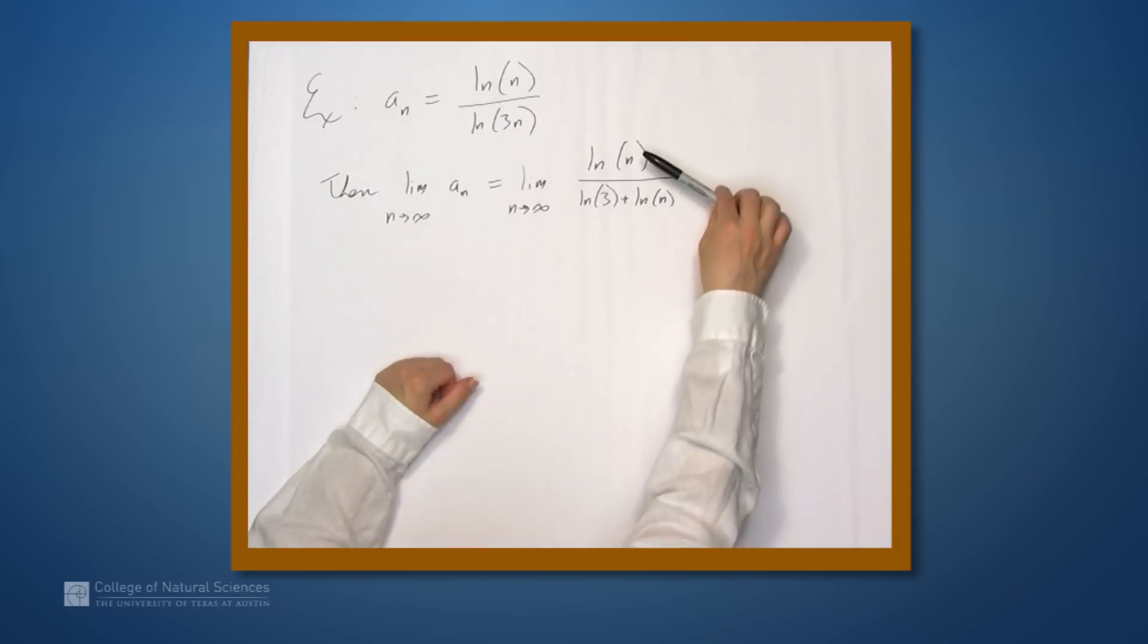Now we have a limit where the top is going to infinity, the bottom is also going to infinity, so we can apply a technique like the one we just used. Before we divided everything by n², now we'll divide everything by the natural log of n.